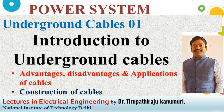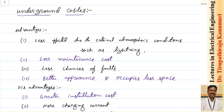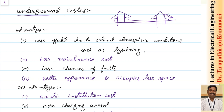Today we are going to discuss underground cables. Before that, let's review overhead transmission lines. In an overhead transmission line, conductors hang between adjacent towers laid throughout the land, occupying a large amount of space.